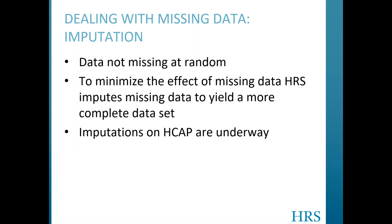Lastly, we'll talk through a few things that are coming next. It's no surprise in a study of cognition and dementia that missing data is prevalent, and of course the data are not missing at random, which can be a problem. To minimize the effect of missing data on your results, HRS imputes missing data to yield a more complete data set, and imputations for HCAP are underway and hopefully available soon.